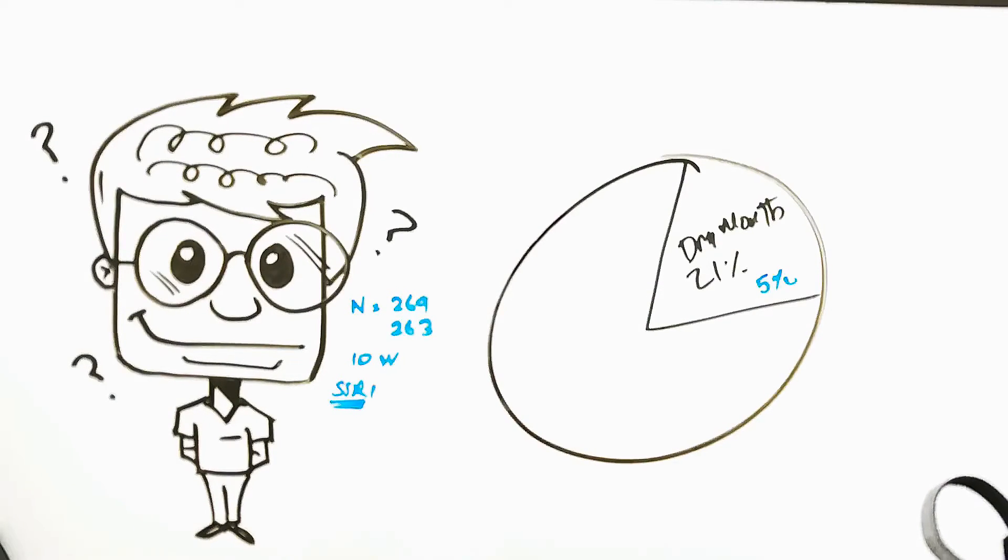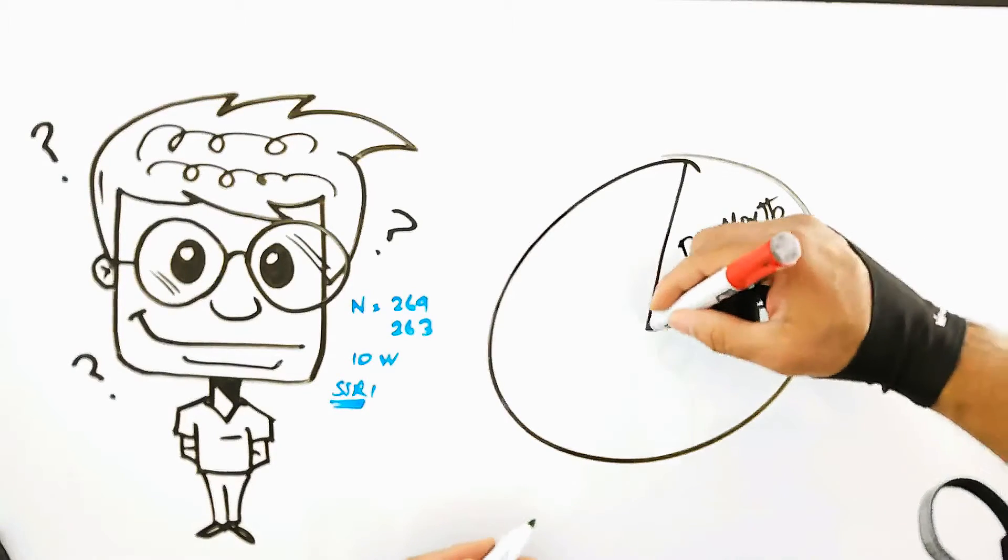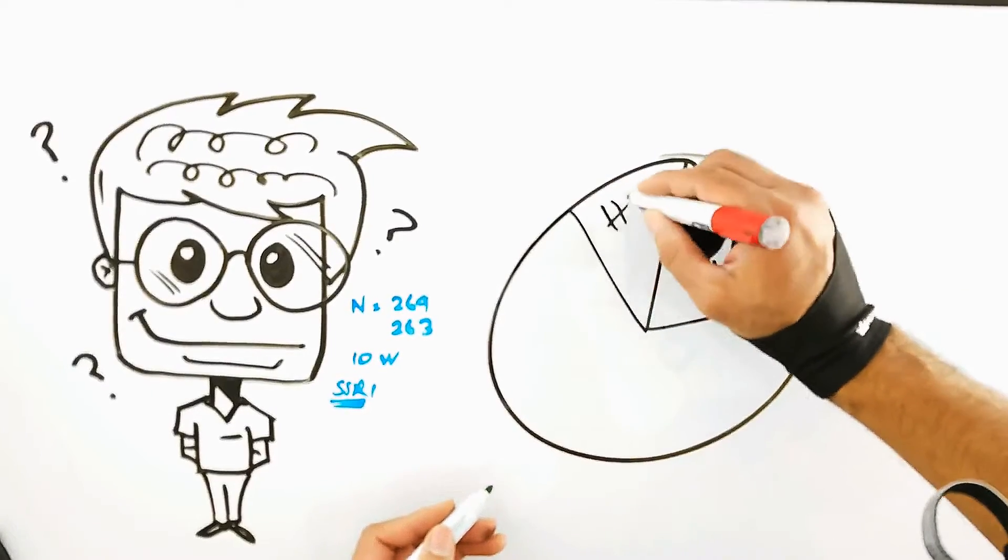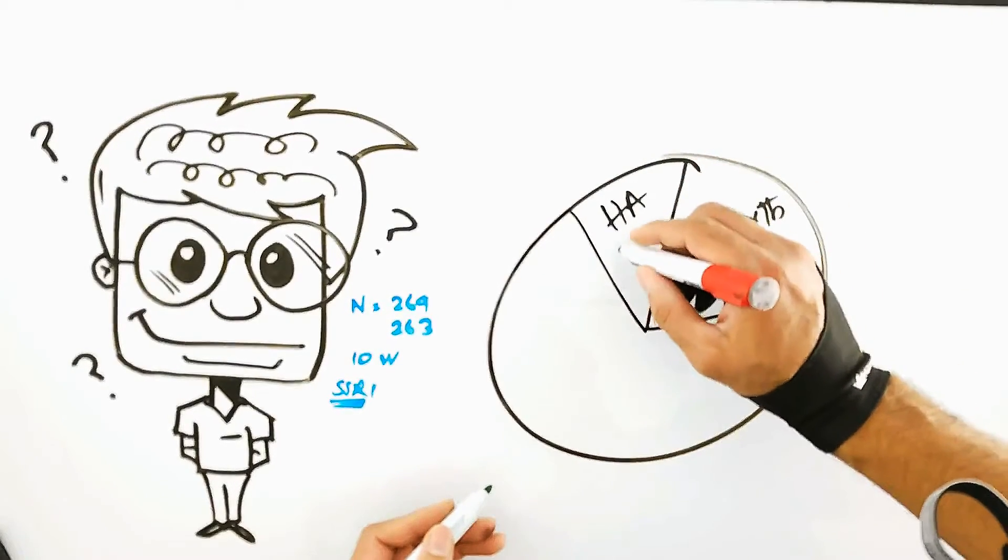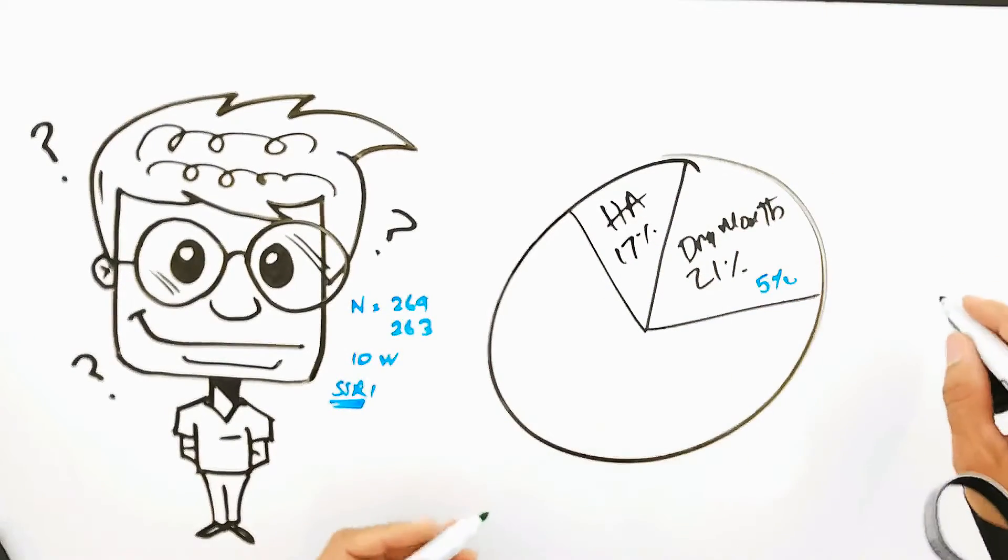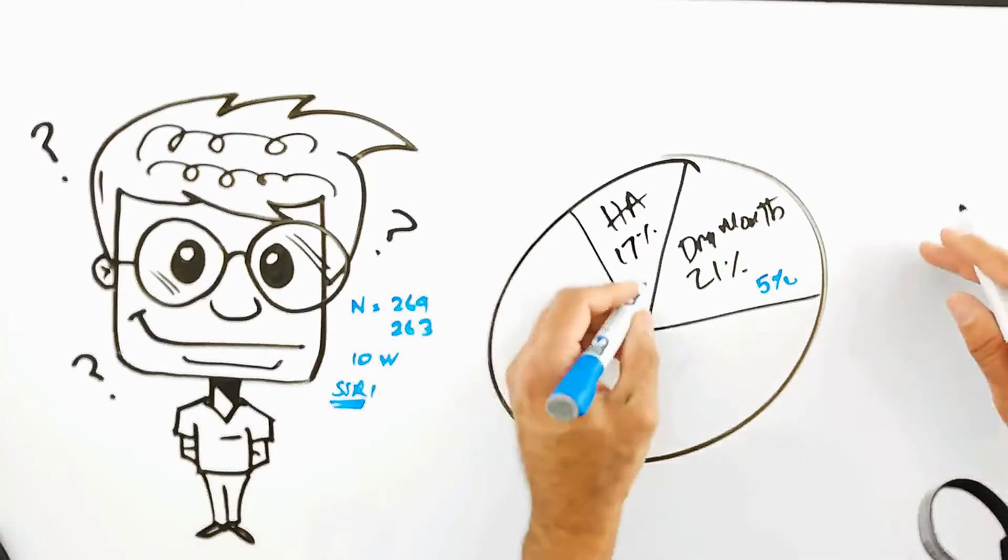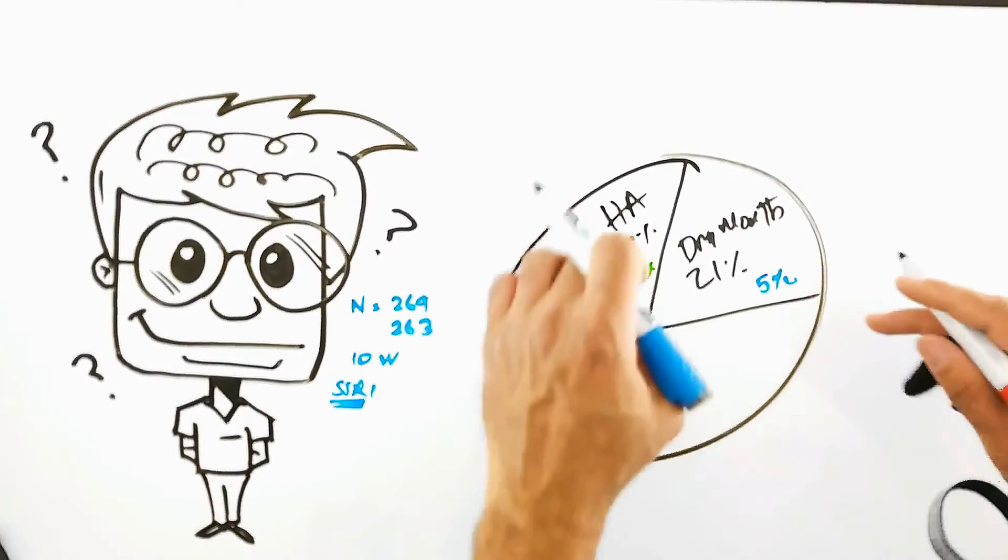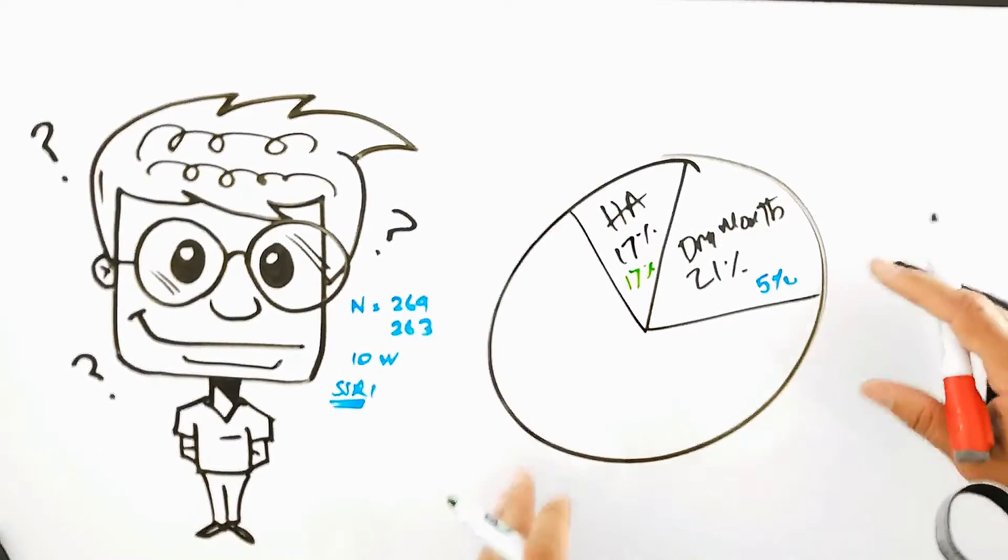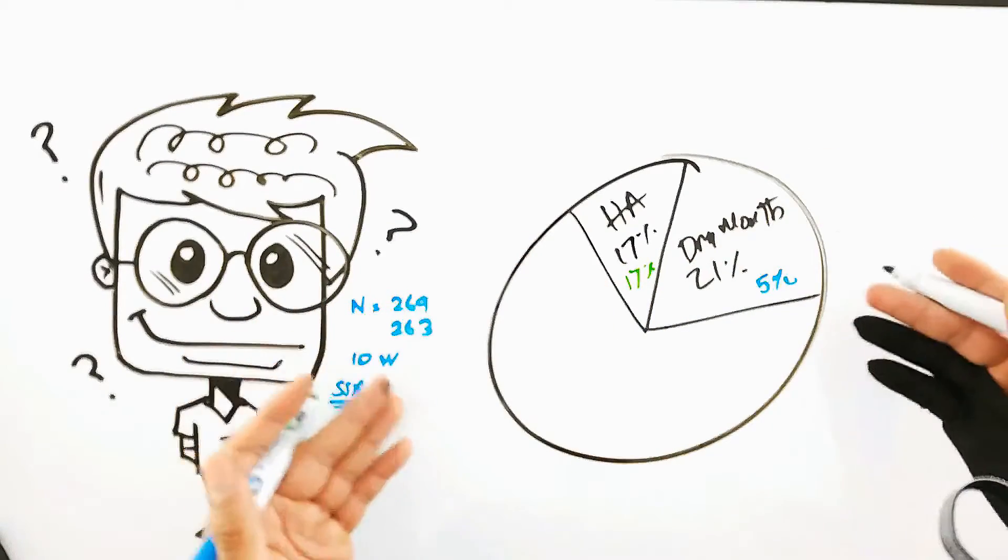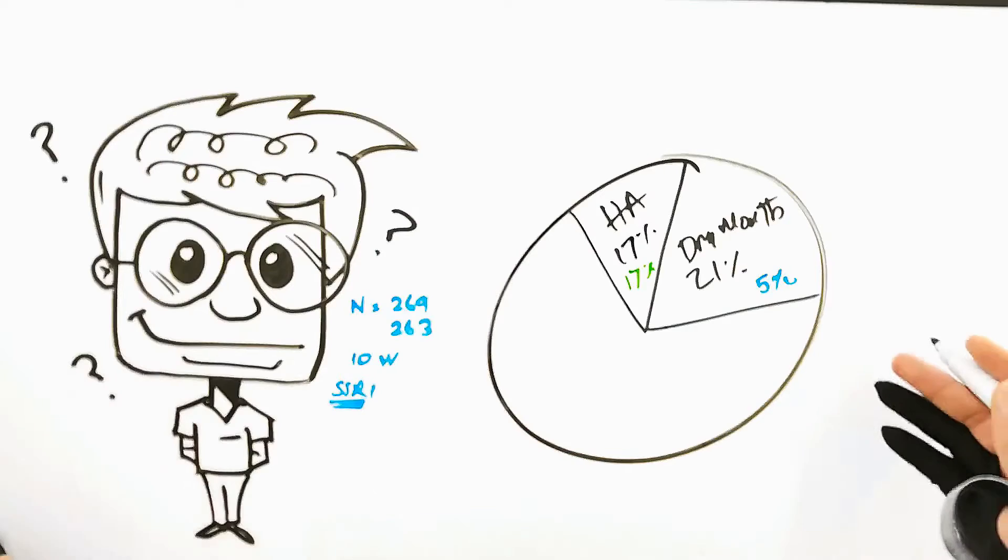The next common side effect that was complained of was in about 17% of people—they complained of headaches. However, 17% of people taking a sugar pill also complained of headache. So in my mind, that basically washes out. To me, the incidence of headache as a consequence of the Strattera basically was zero.